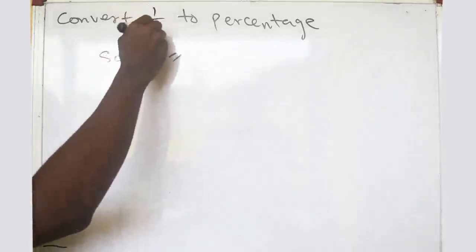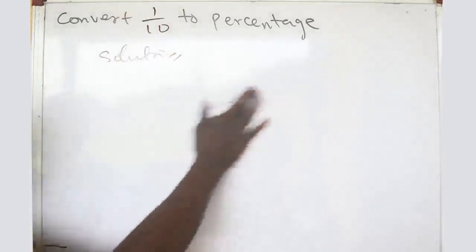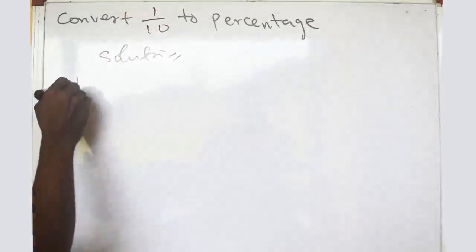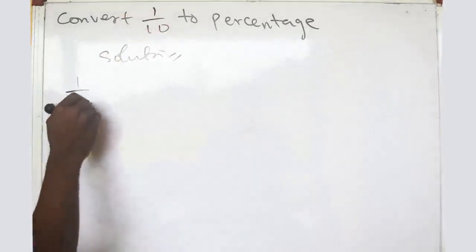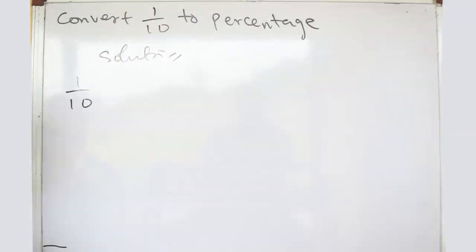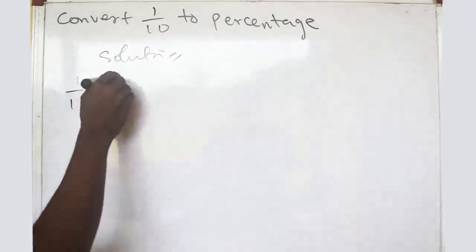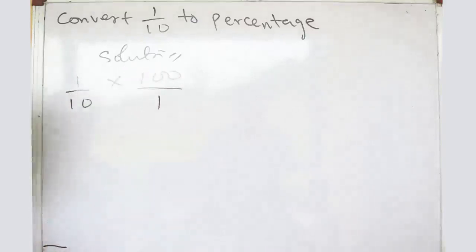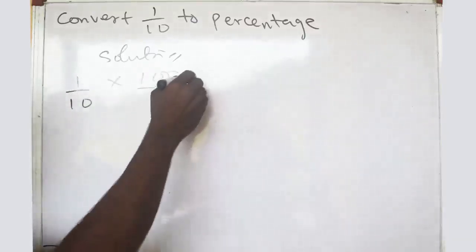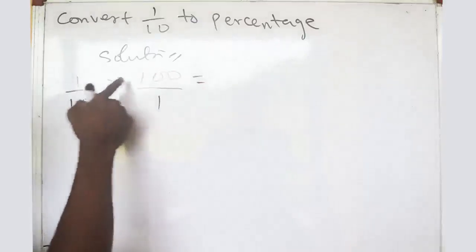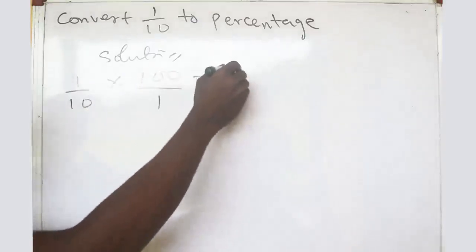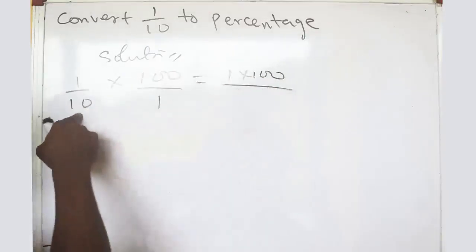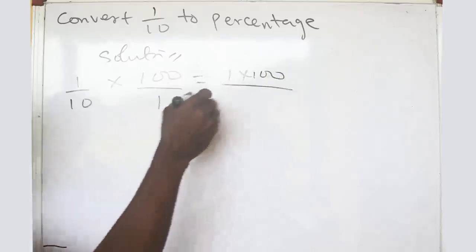Let me clean up and give you another example. Suppose we have one over ten — convert one over ten to a percentage. You write the question, which is one over ten, and to convert it to percentage you multiply by one hundred divided by one.